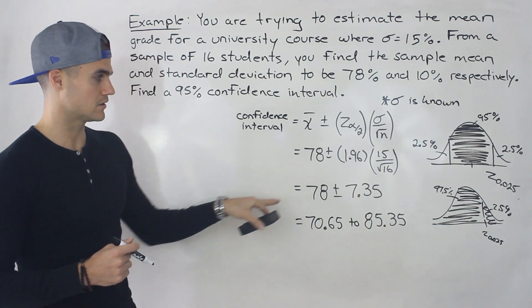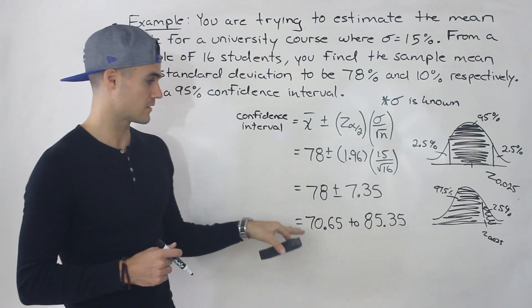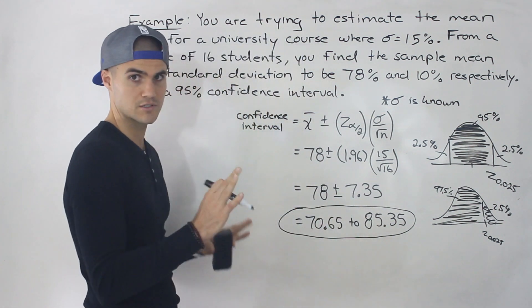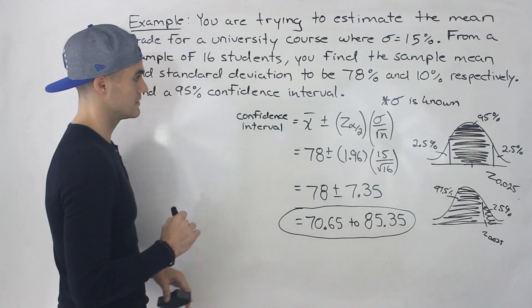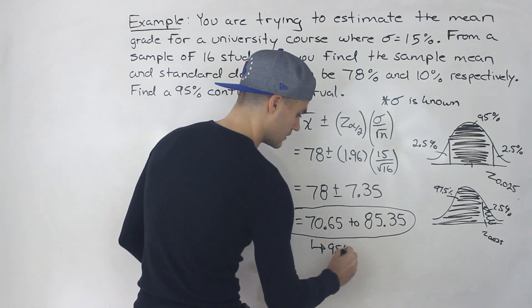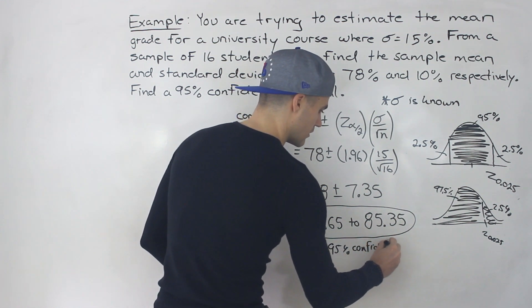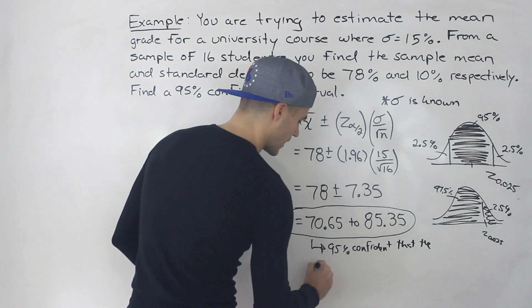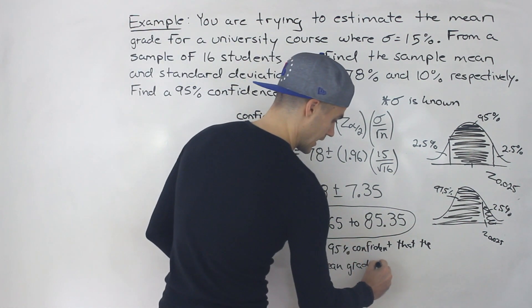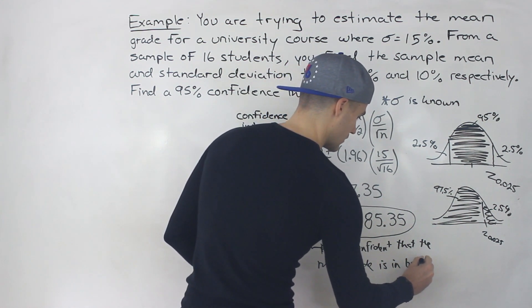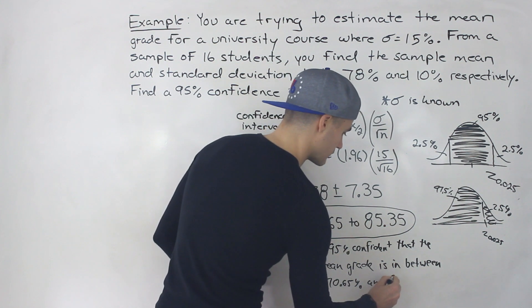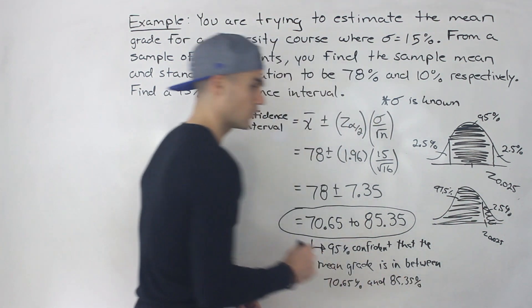When you do the calculation, the margin of error works out to 7.35. Adding and subtracting that from the sample mean of 78, you end up getting 70.65 to 85.35 — keeping it to two decimal places. That is the 95% confidence interval. This means you can be 95% confident that the mean grade for all students taking this course is between 70.65% and 85.35%.